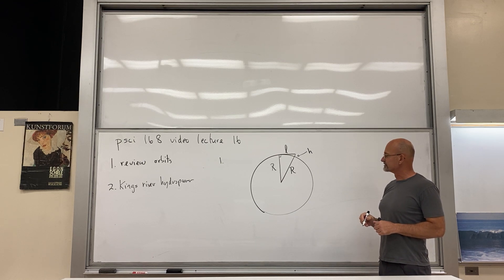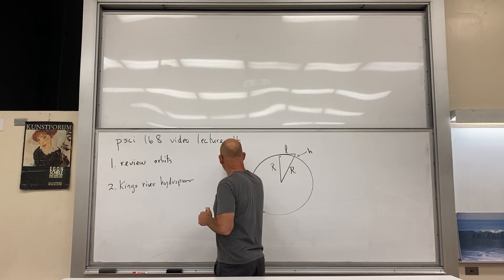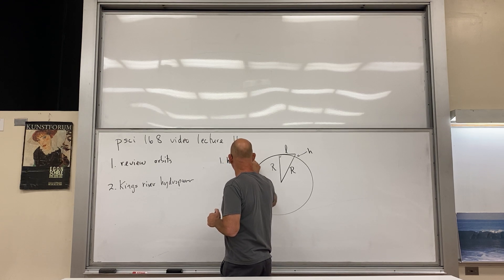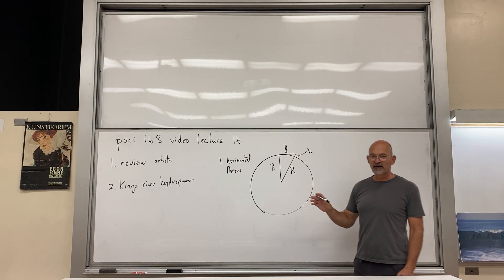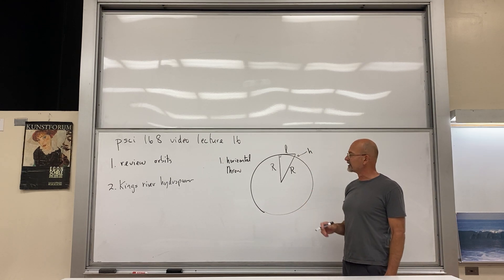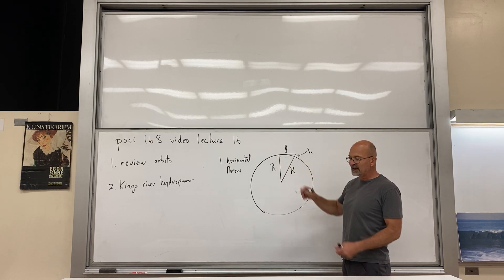You'll notice this side has the radius r, but there's a little bit sticking out there that is what we call h, and this side of the right triangle we call l. Okay, so the first thing we have to note is we begin with the horizontal throw.